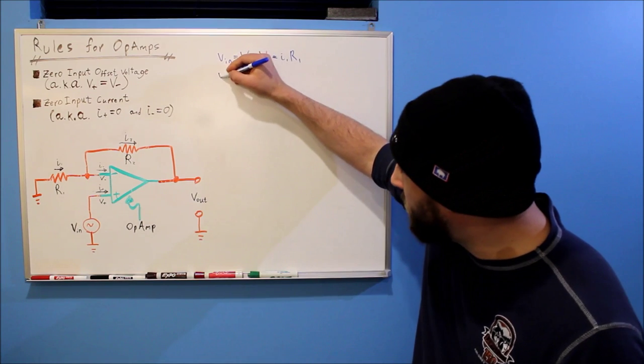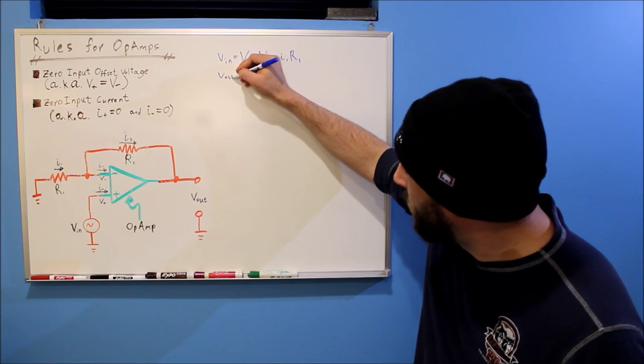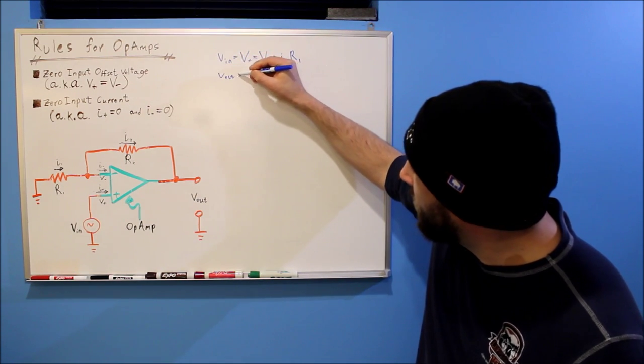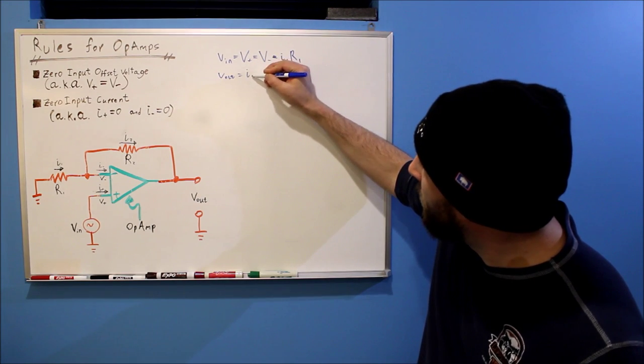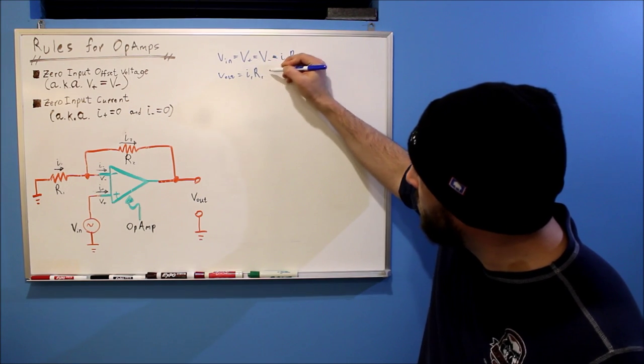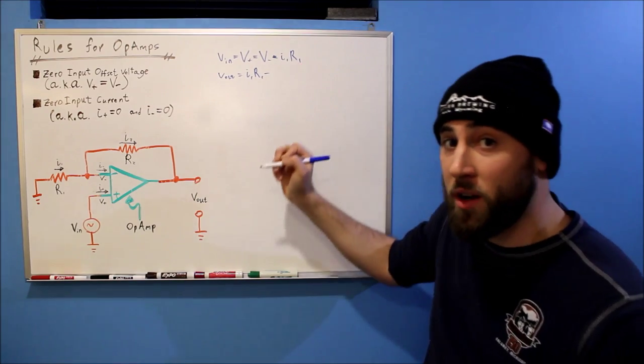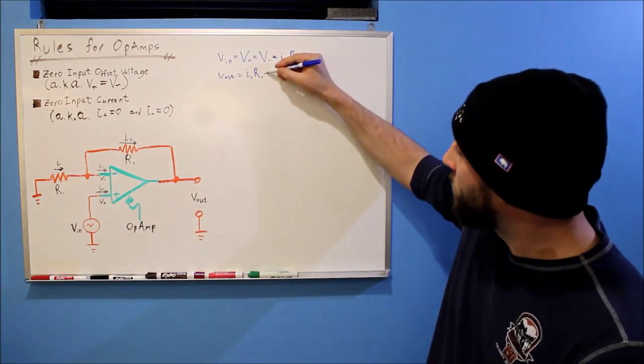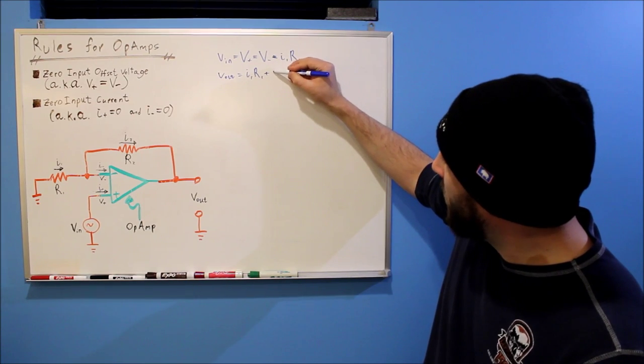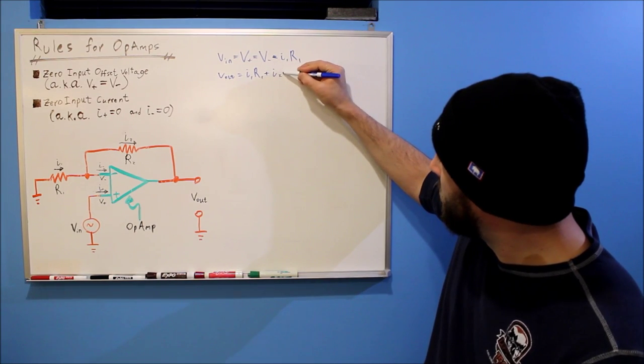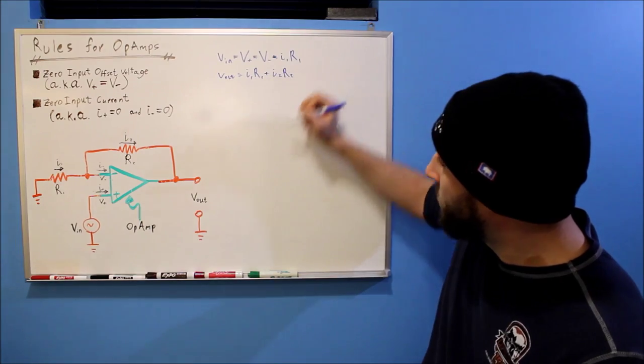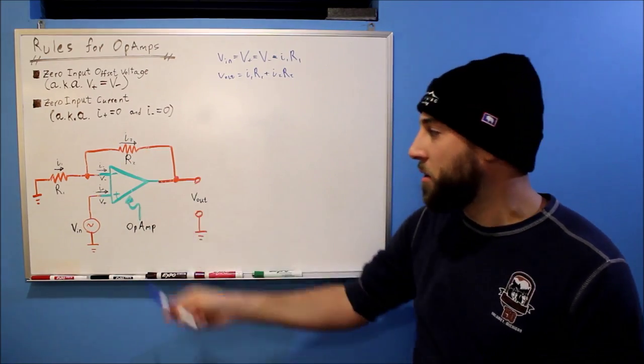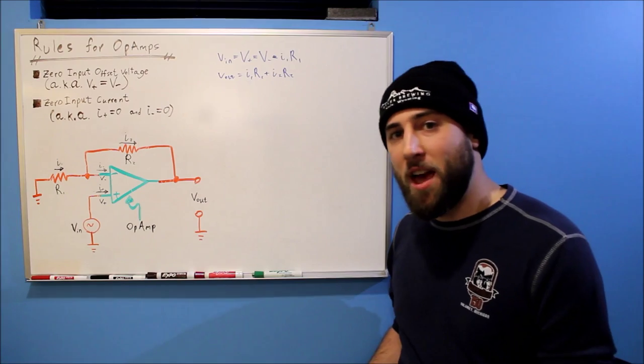So our V out is equal to I1 R1. That's the voltage across resistor 1 and I2 R2. That's the voltage across resistor 2. So the sum of those voltages, that should be V out.